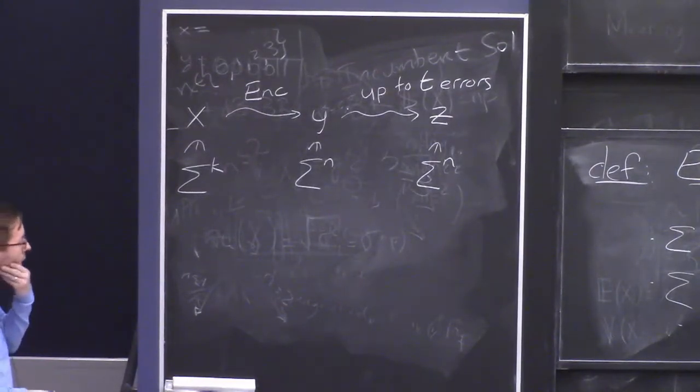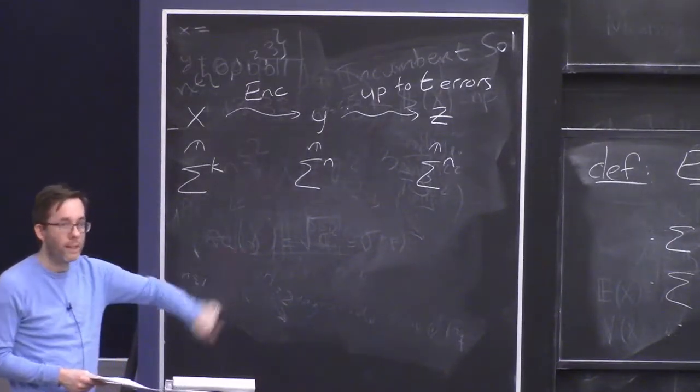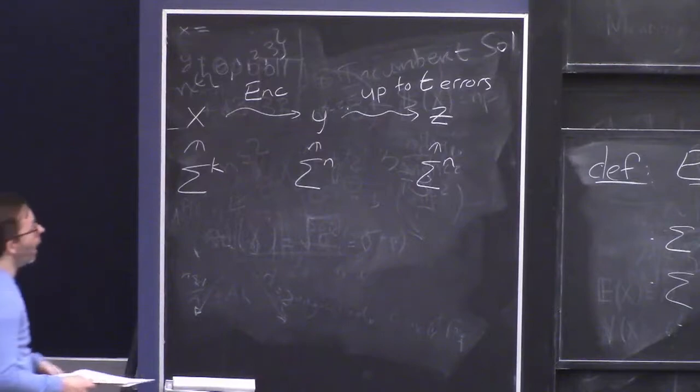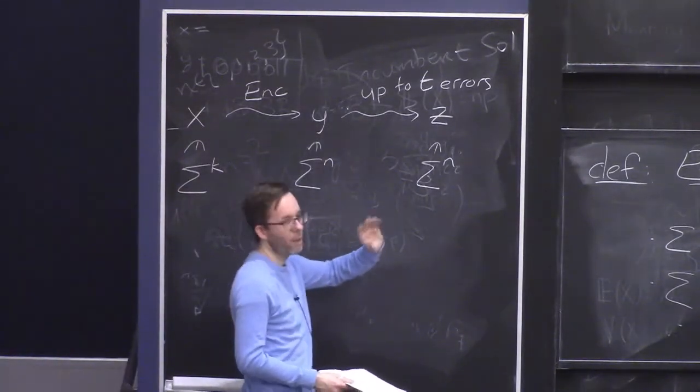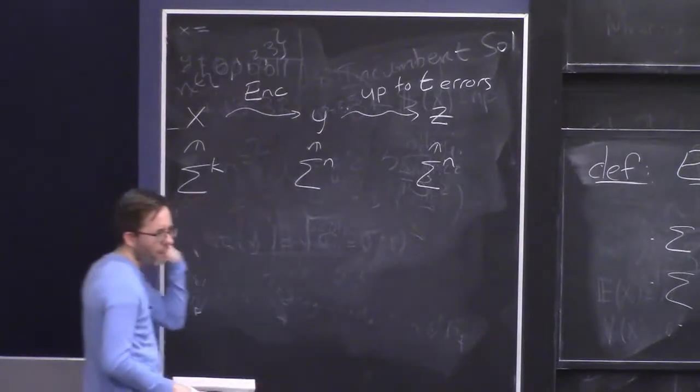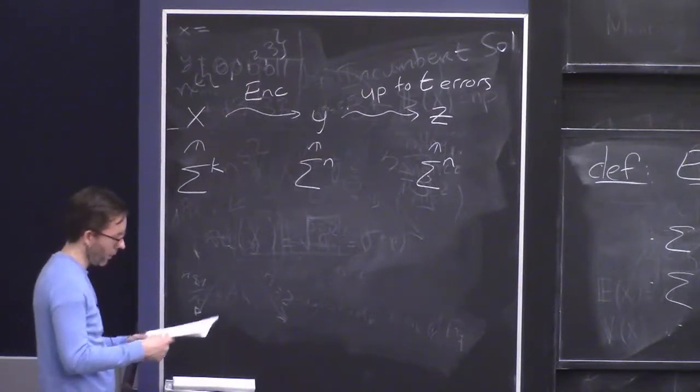So at least in this lecture, we're not going to talk about the possibility of errors that insert a symbol or delete a symbol or somehow erase a symbol. We'll just imagine the case where a symbol gets corrupted, changed to a different symbol. And oftentimes, this is a reasonable model that encompasses some of the other models.